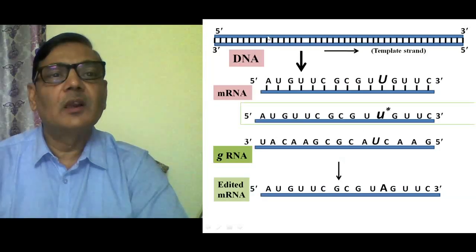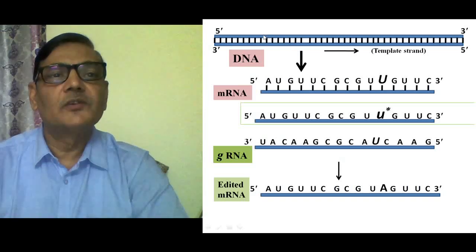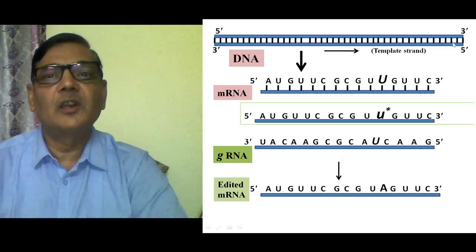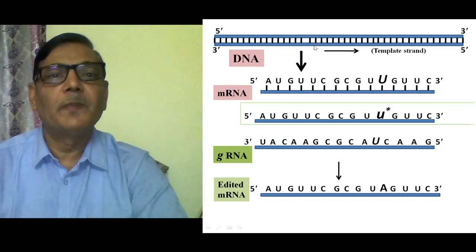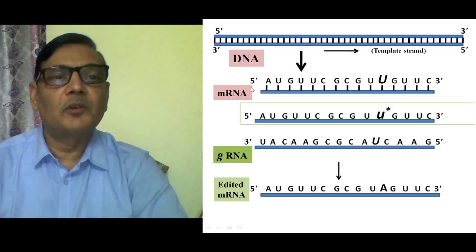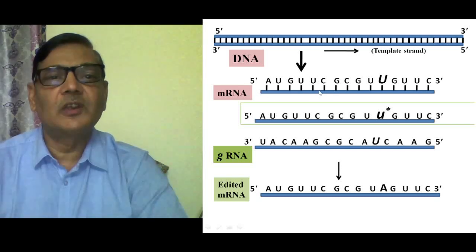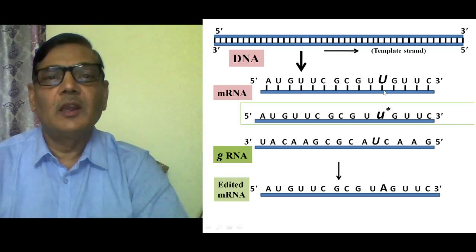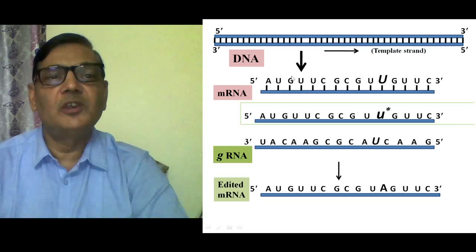We can understand the entire phenomenon by going through this diagram. The upper double-stranded structure is a DNA molecule. Its lower strand is synthesized into a pre-RNA, which gets properly processed and becomes messenger RNA. This RNA then has to be processed further.